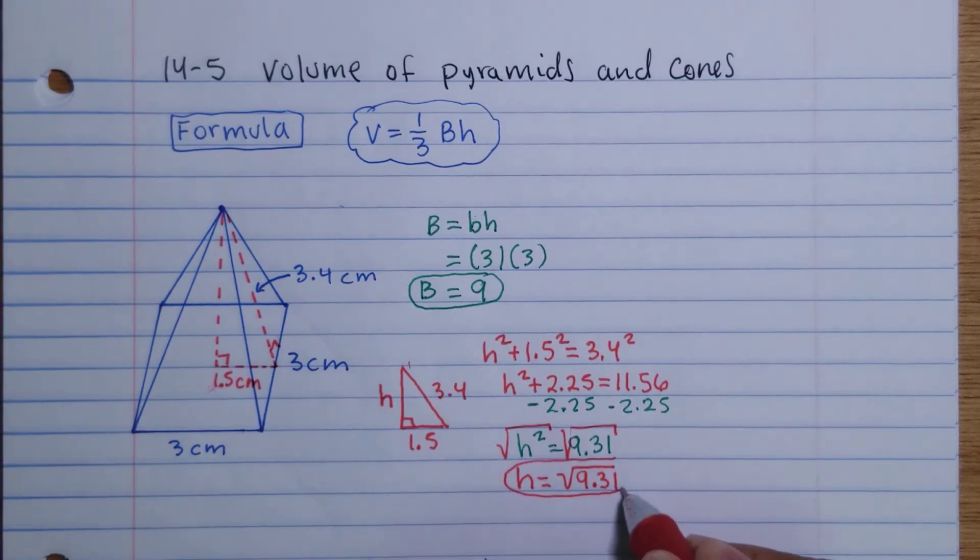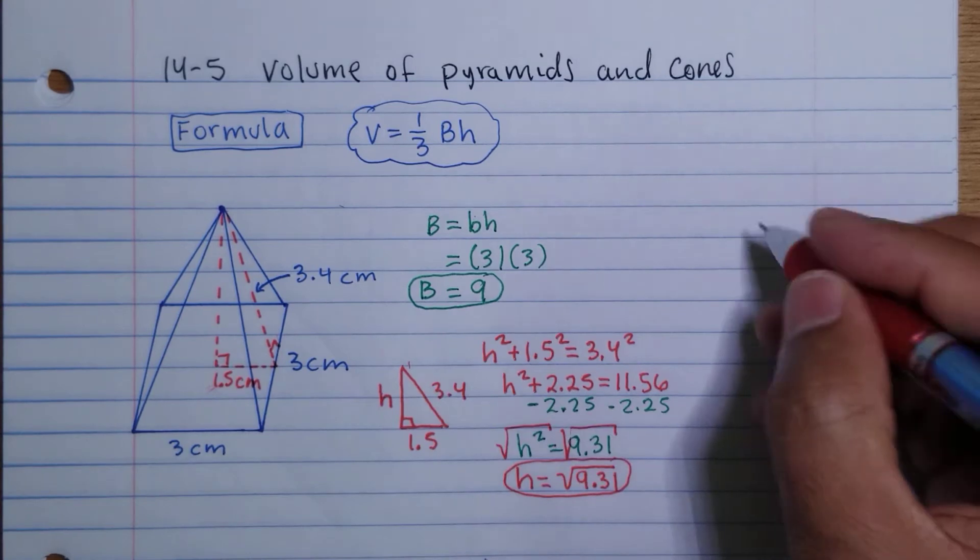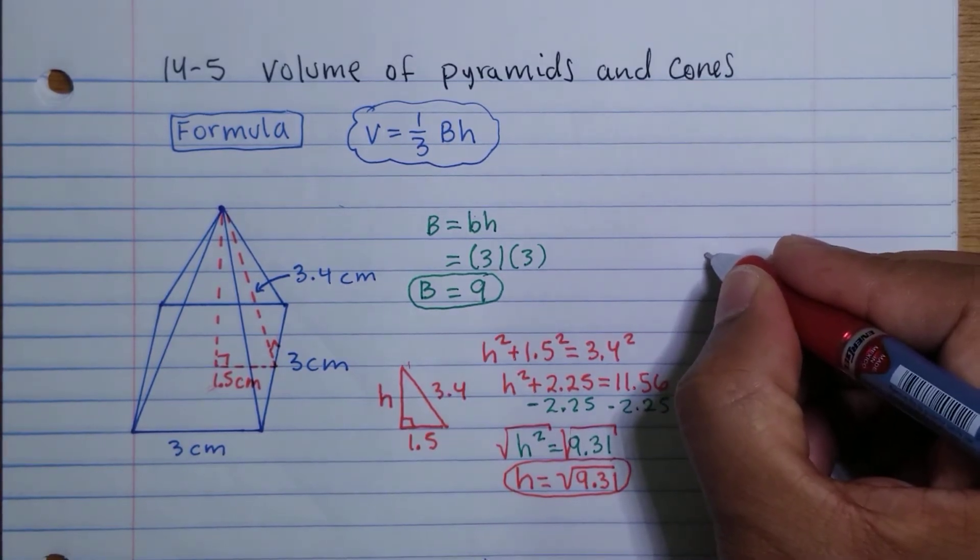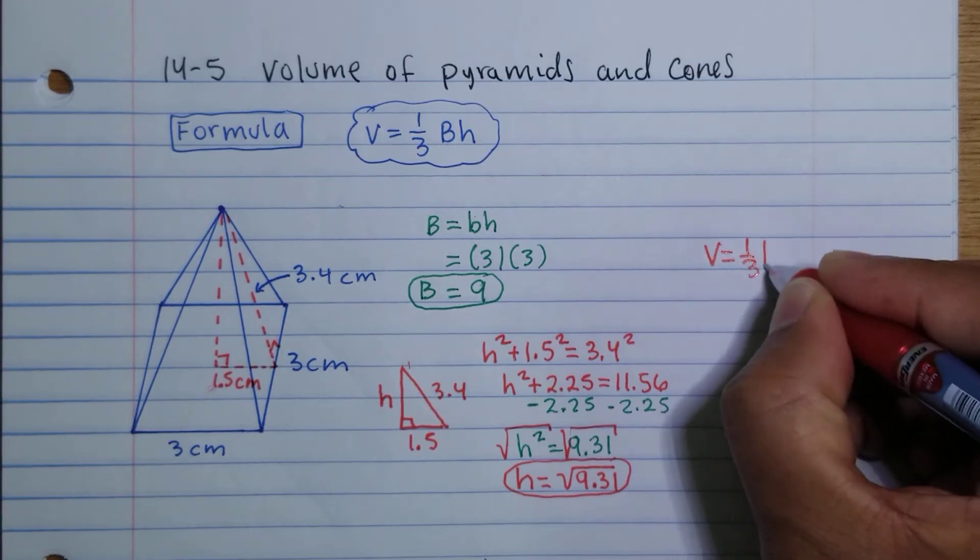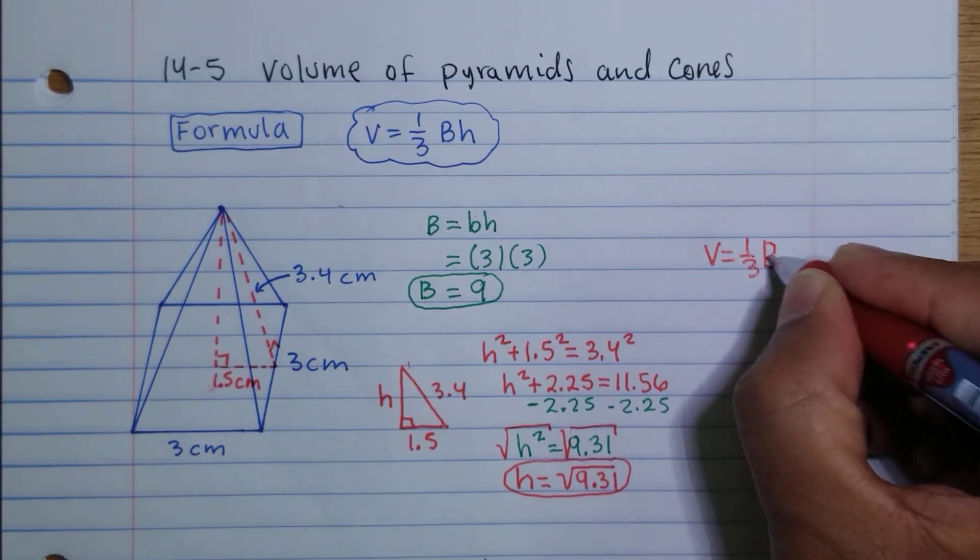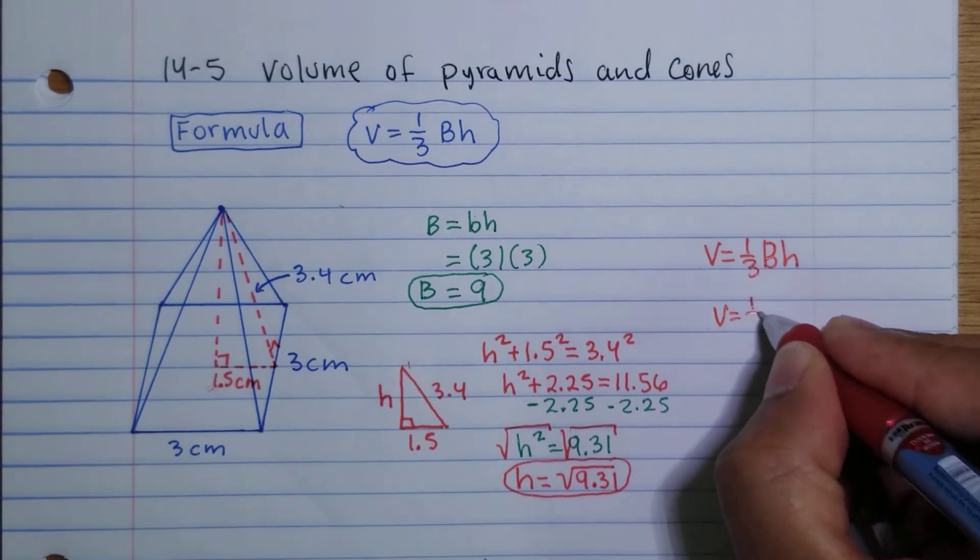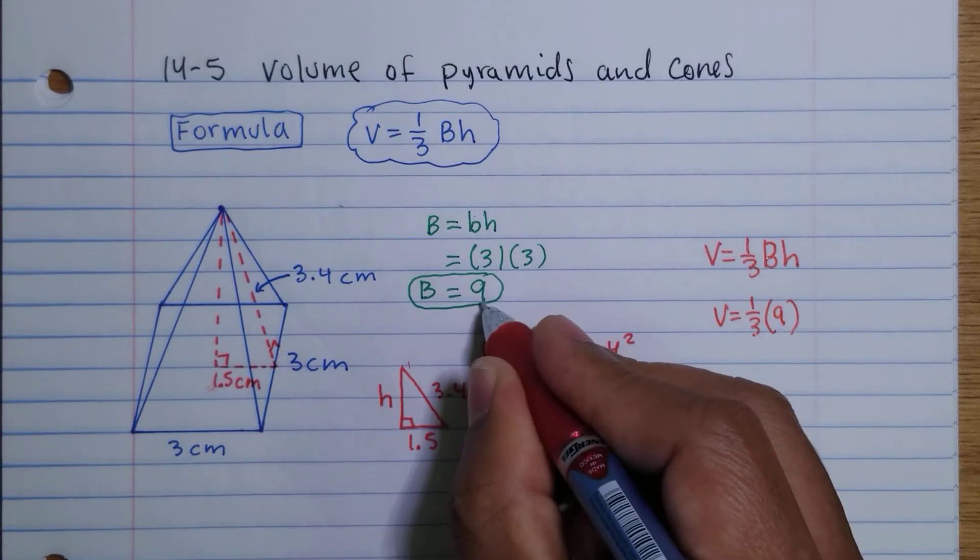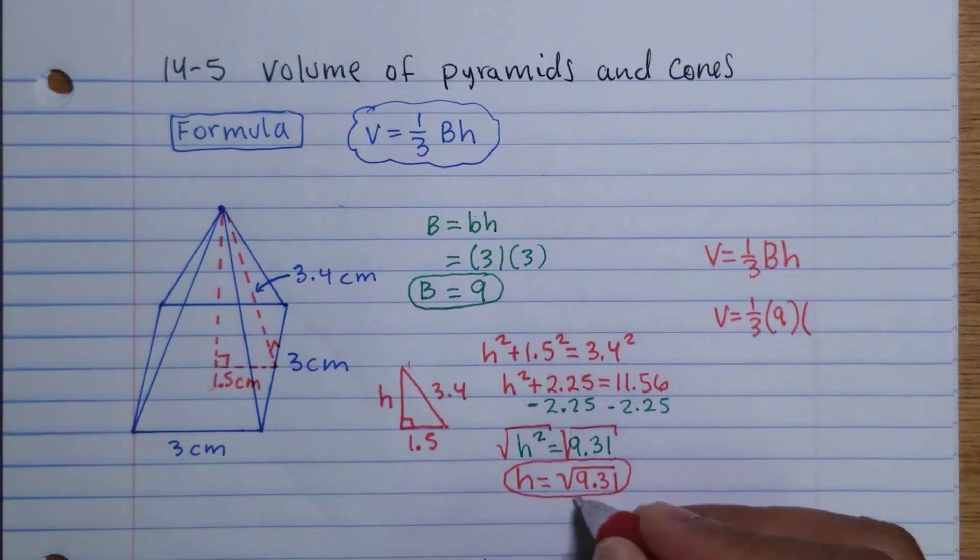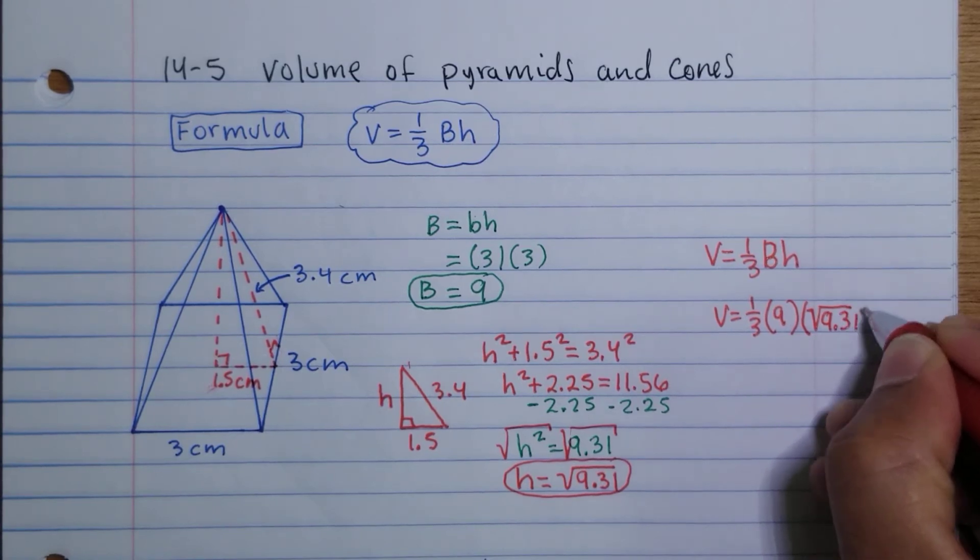So I'm going to substitute. I'm going to just write down the formula for now to find volume: V = 1/3 times the base times the height. So this equals 1/3, B is 9, and H is the square root of 9.31.